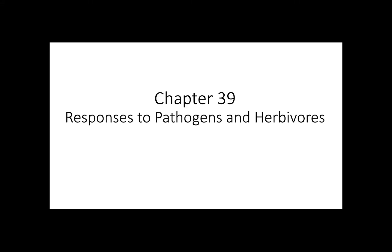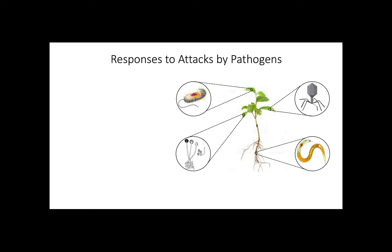This video provides information about how plants respond to pathogens and herbivores. As primary producers at the bottom of most food webs, plants are subject to attack by different herbivores, viruses, bacteria, and other pathogens like fungi.